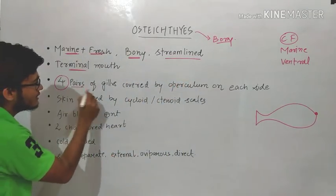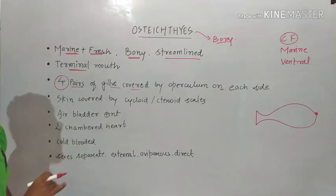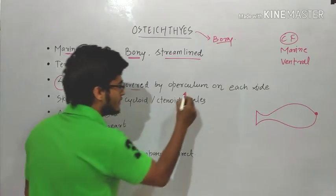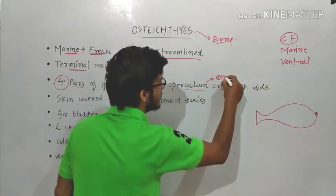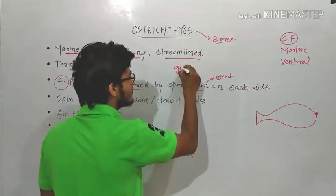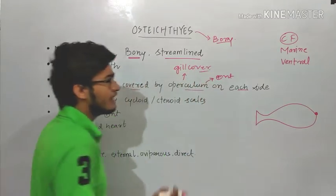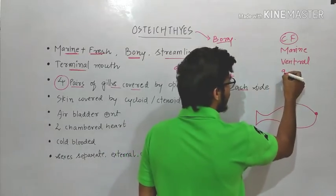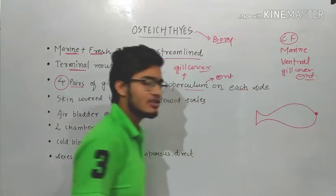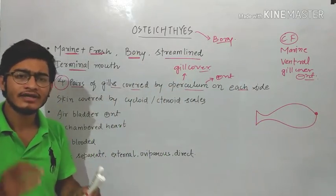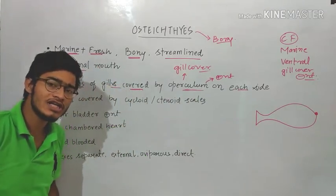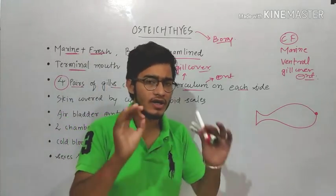After that, four pairs of gill slits are present in bony fishes. The operculum is also present on each side — it is the gill cover. In case of cartilaginous fishes the operculum or the gill cover was absent. But in case of bony fishes there are four pairs of gills which are covered by the operculum on each side.